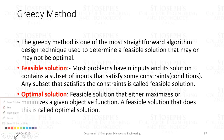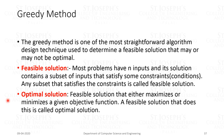The greedy method is the simplest and most straightforward algorithm design technique among all algorithmic approaches. It is mainly used to solve optimization problems and is easy to implement and quite efficient in most cases. Most problems have n inputs and require us to obtain a subset satisfying some constraints. Any subset satisfying these constraints is called a feasible solution, and we need to find a feasible solution that either maximizes or minimizes a given objective function — this is called an optimal solution.